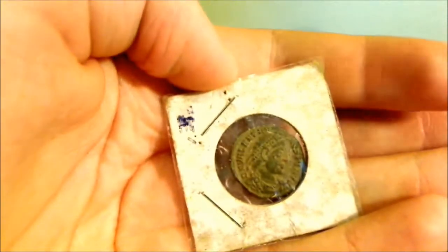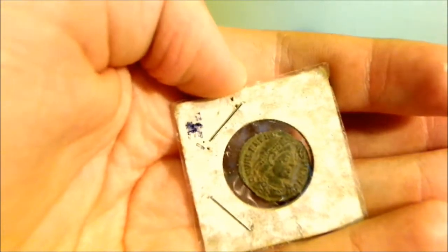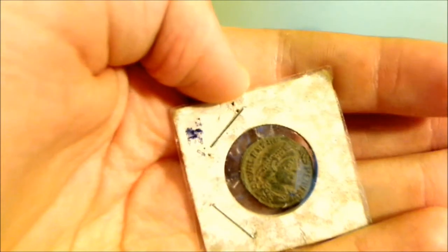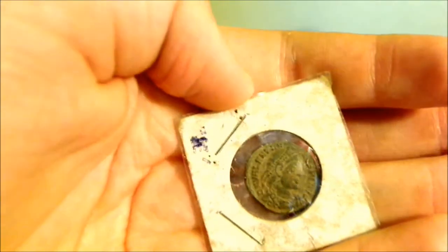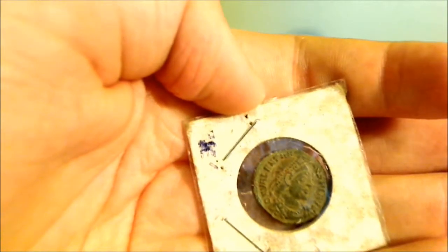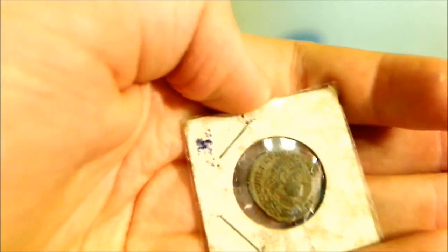If it'll focus. There we go. It's my favorite. You can see, like, every detail on his hair and stuff. So, I've seen coins like this, Valentinian, go for $100 to $200.